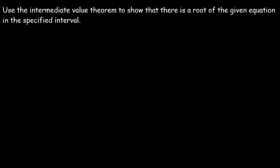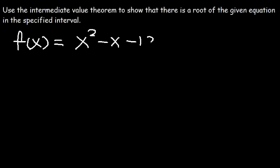Use the intermediate value theorem to show that there is a root of the given equation in the specified interval. The function f(x) is equal to x squared minus x minus 12, and the interval is 3 to 5.